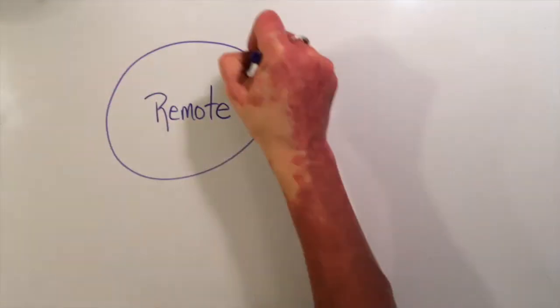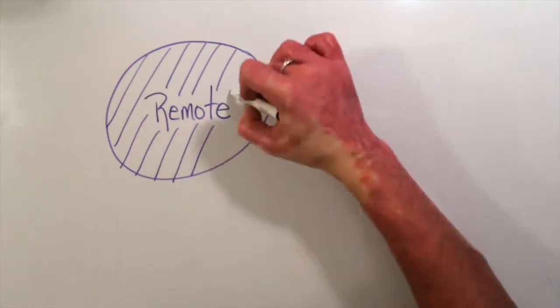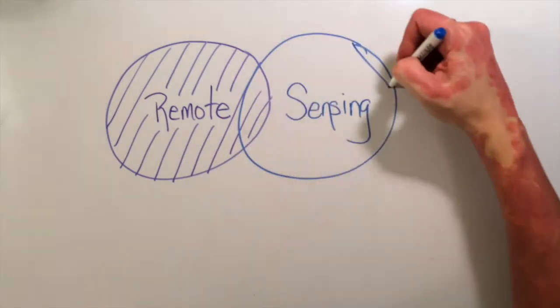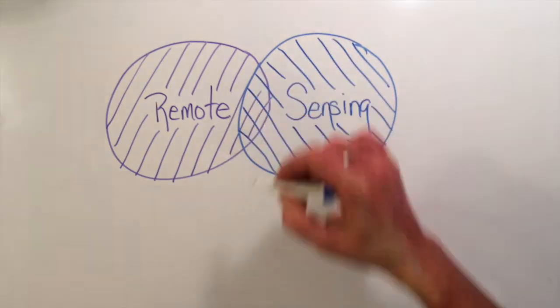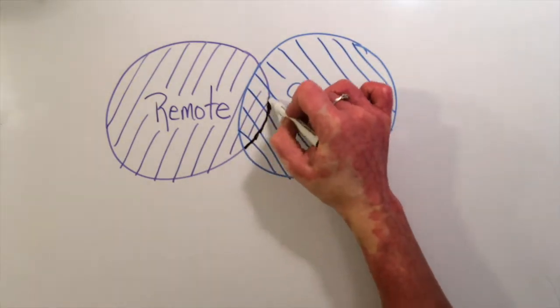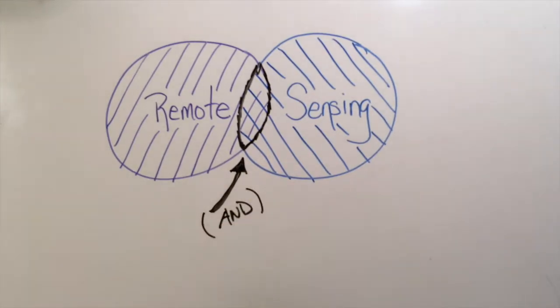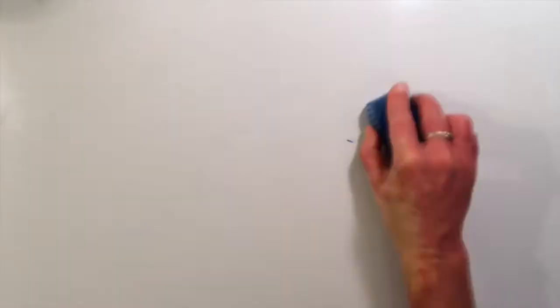So what actually happens in the computer is that it searches for the word remote and it pulls up all the journal articles that have the word remote in it. It also does a search for the word sensing and it pulls up all journal articles that have the word sensing in them. But it filters it out and only shows you the journal articles that have remote and sensing in it. Both of them. That little slice right in the middle.